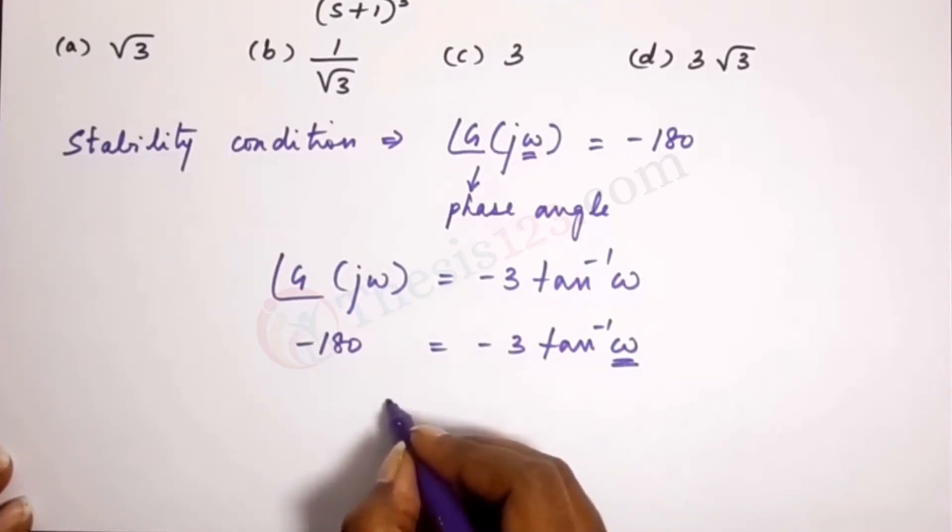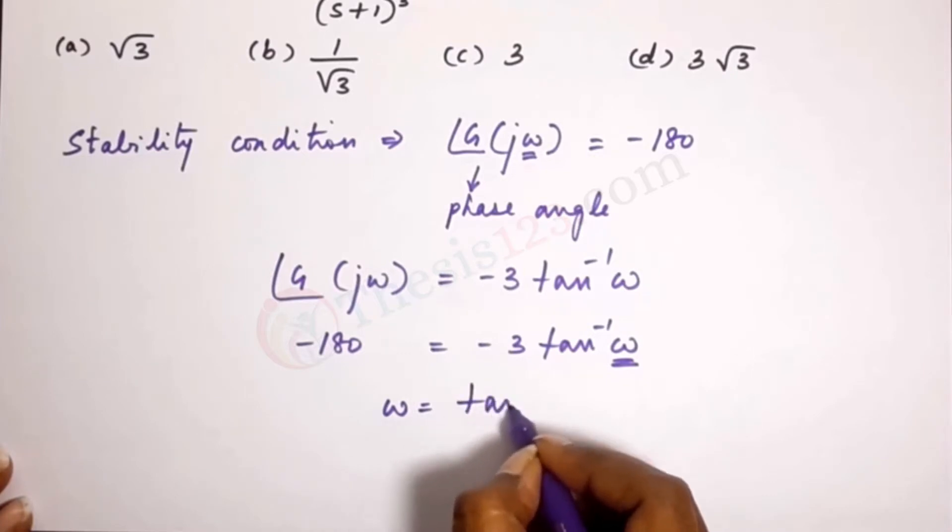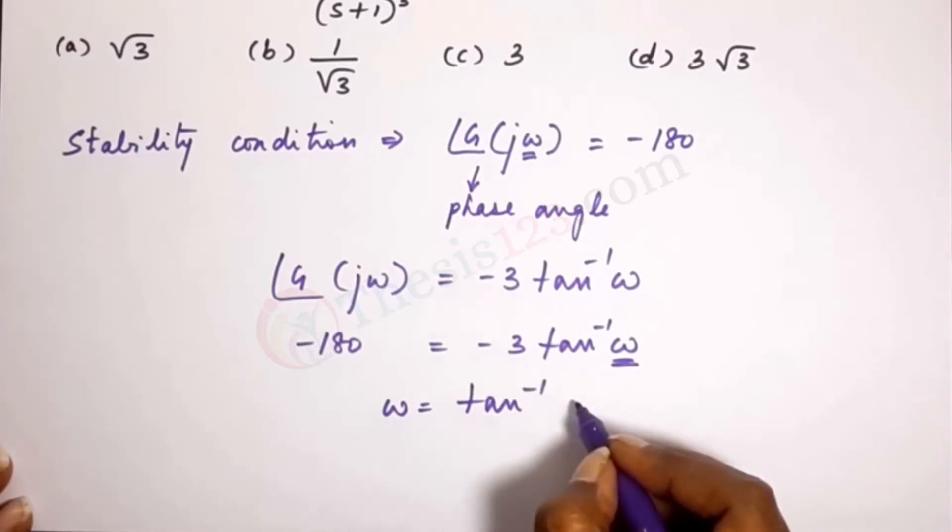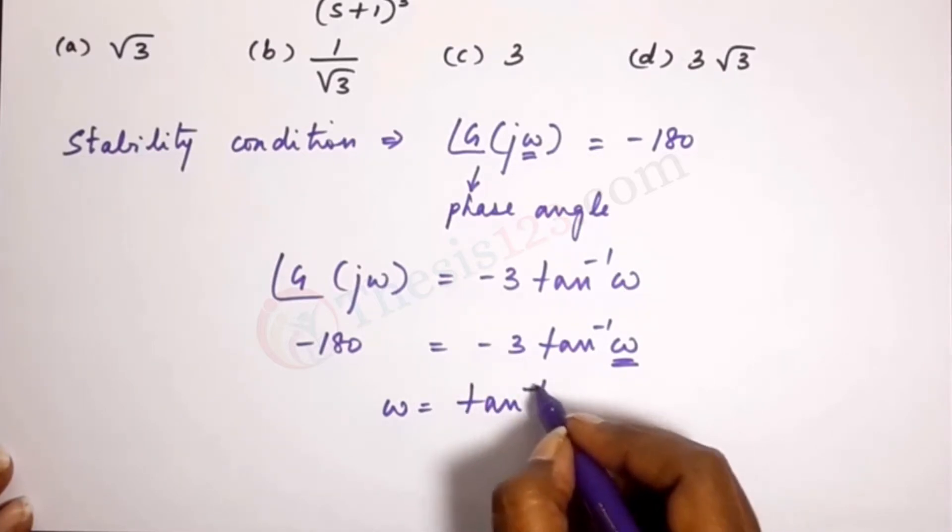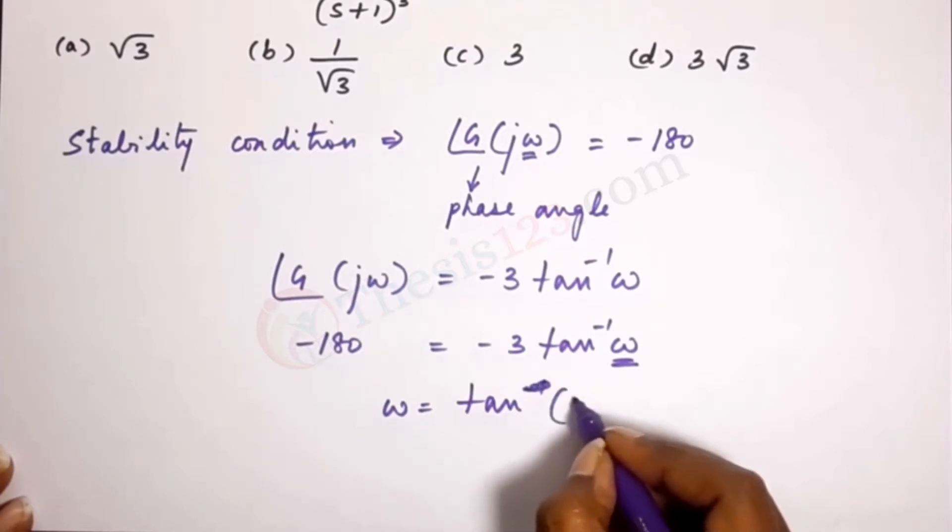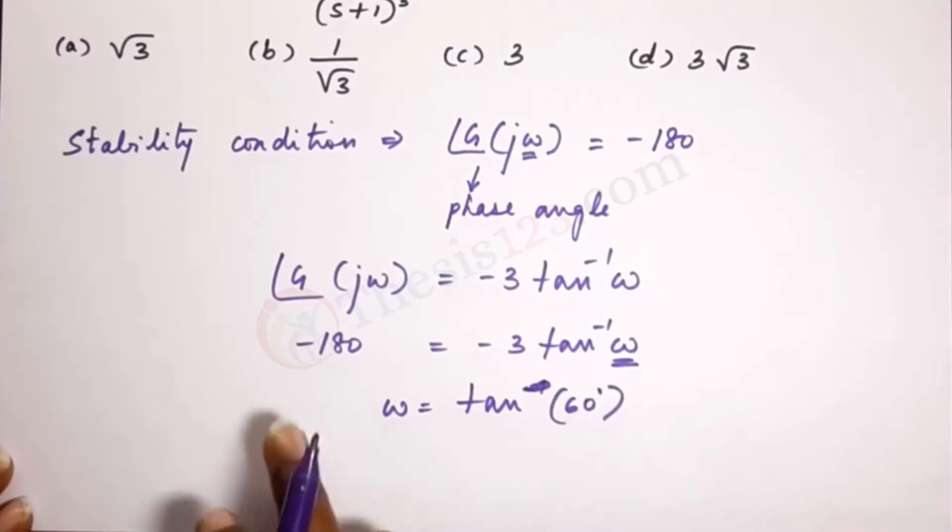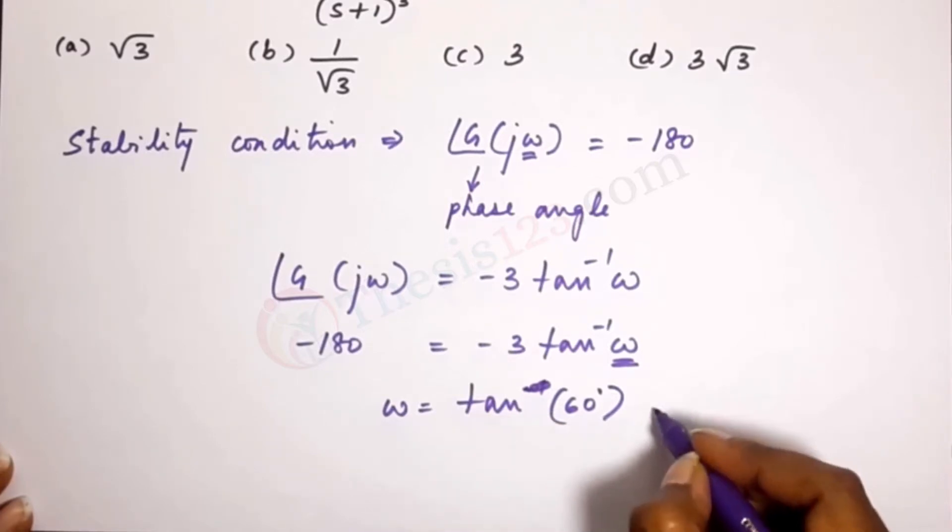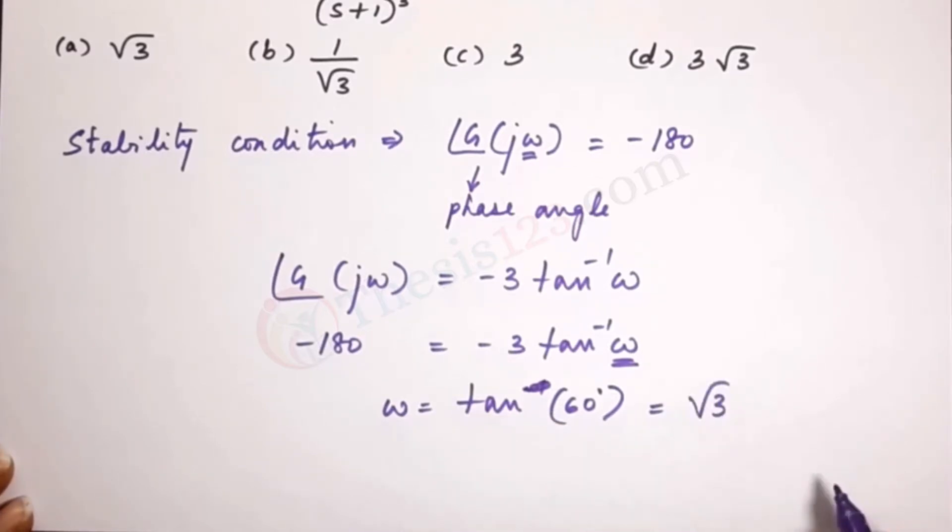So we get omega is equal to tan of 60. 180 divided by 3 so that's 60. So tan of 60 is root 3.